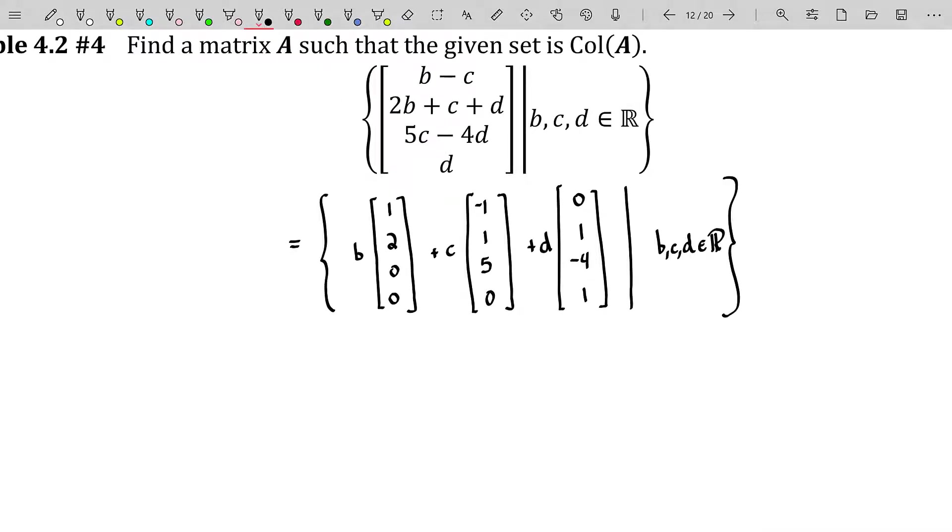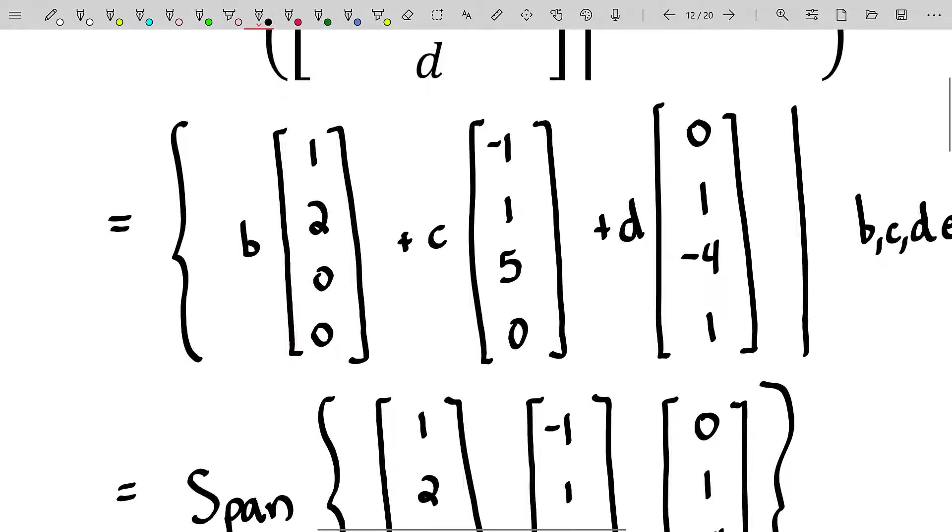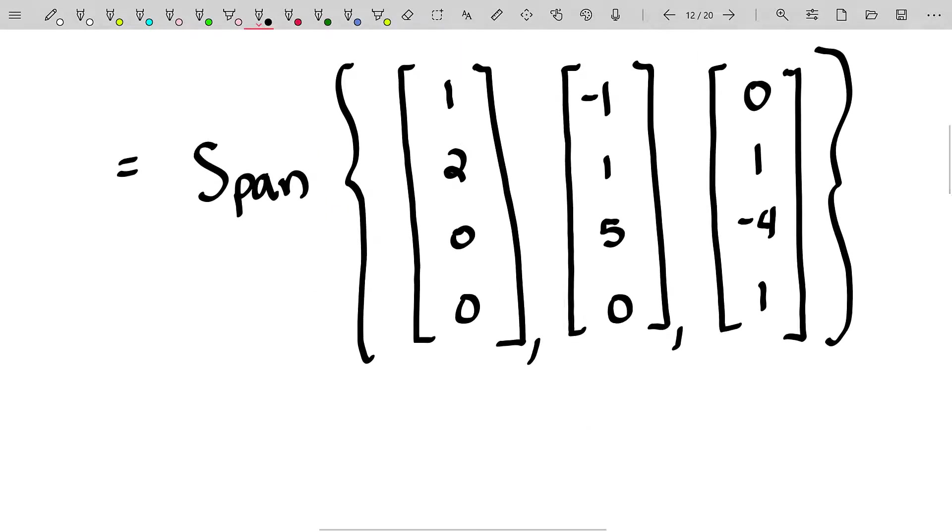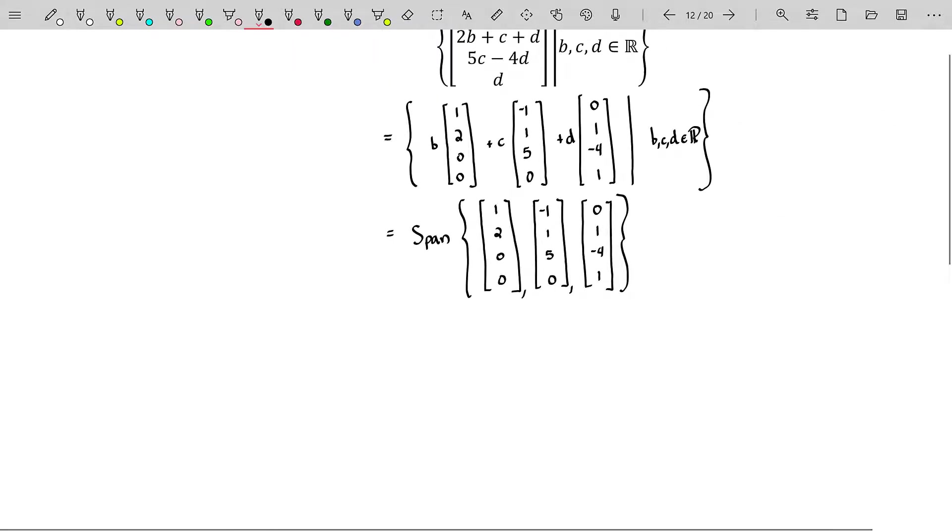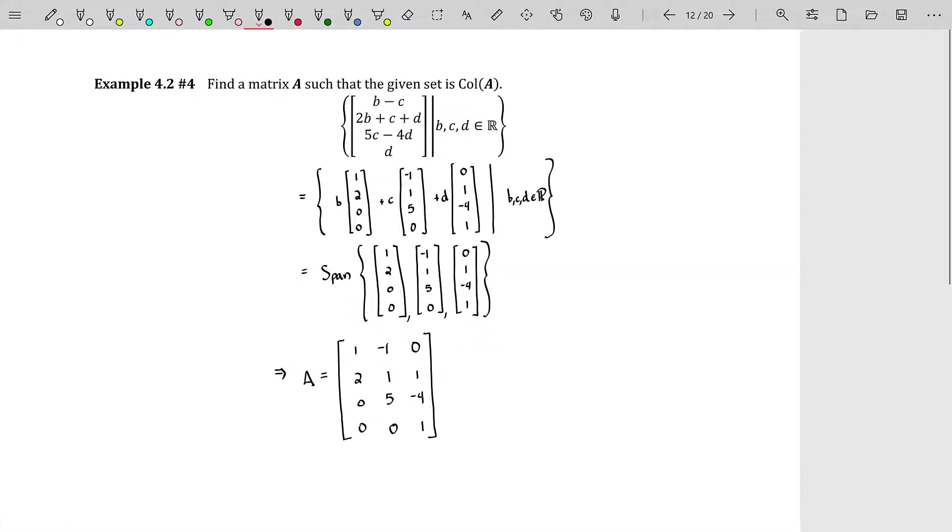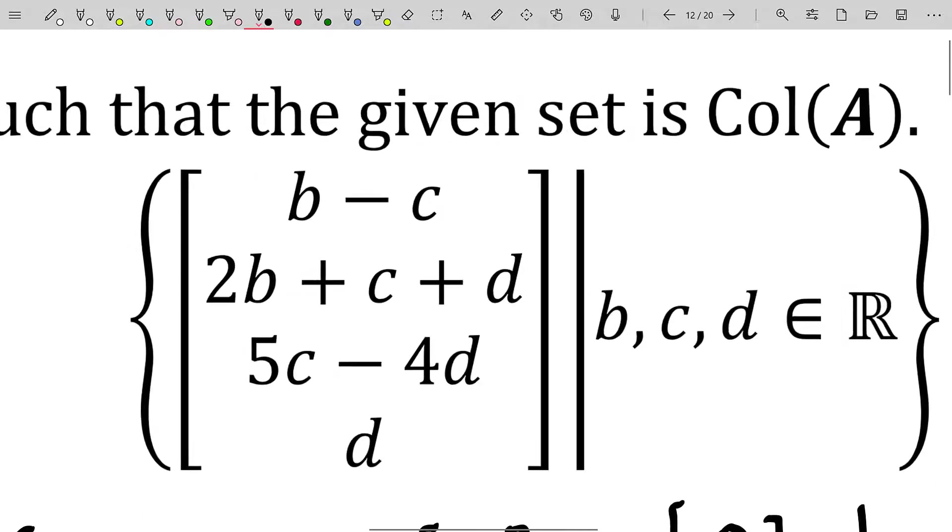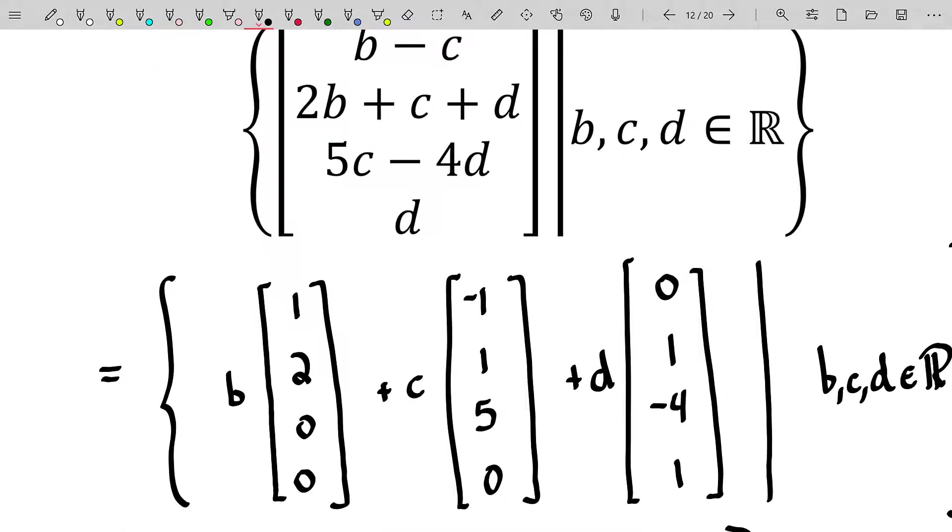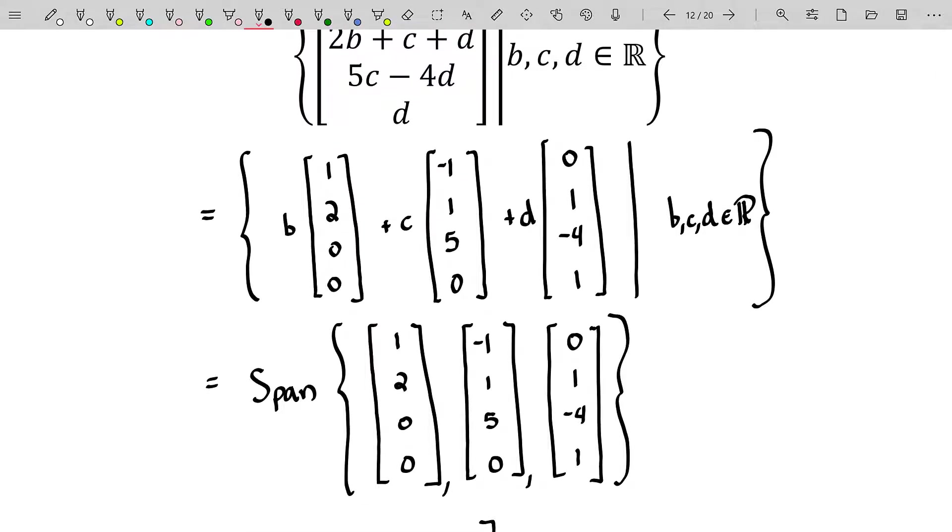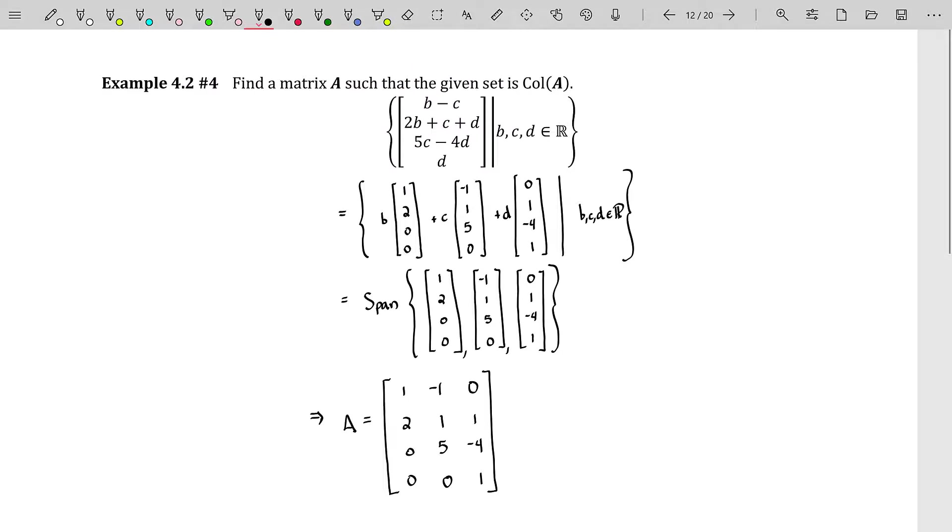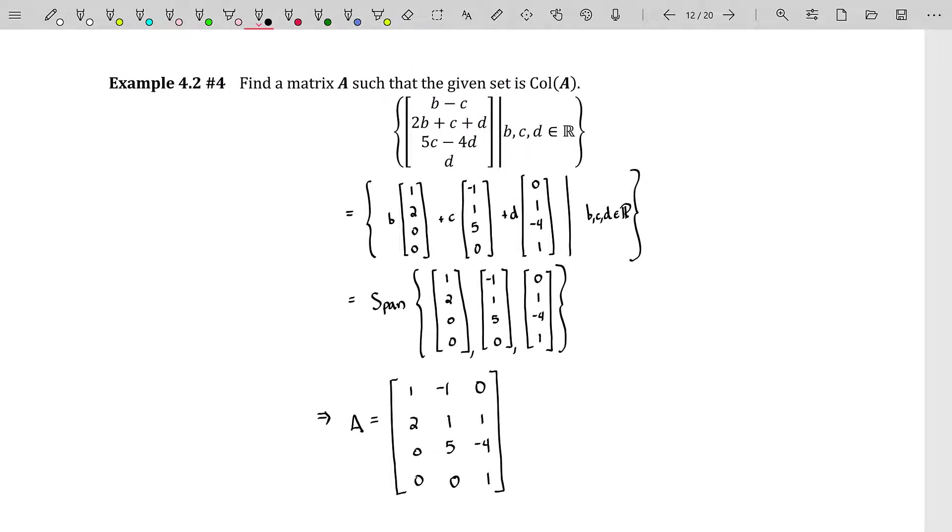Now that I've said spanning set, I'll say this equals the span of those vectors. This is just all linear combinations of those three vectors. Thus, the matrix A should be comprised of just those three vectors. So we have found our matrix A where the column space of that matrix A generates this set of vectors, which is the same as the span of those three vectors there.